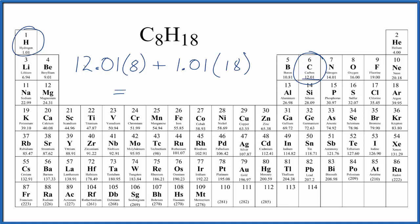So we multiply 12.01 times eight, and we add that to 1.01 times 18. We end up with 114.26, and now the units of grams per mole.